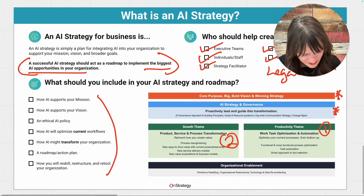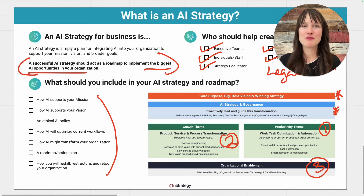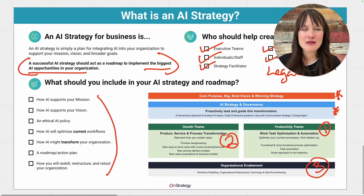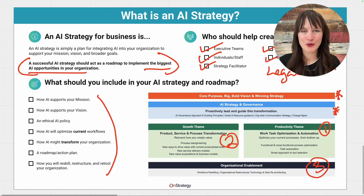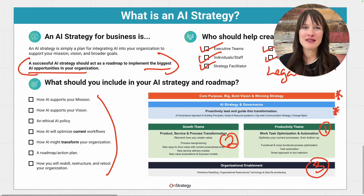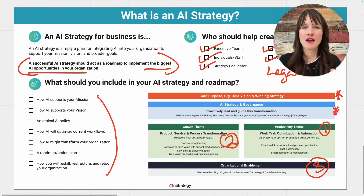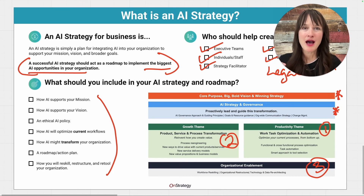Last, but certainly not least, is organizational enablement. The change aspect of this is so important. As organizations, we want to enable human efforts and automate what's automatable and AI what's AI-able. That means that our team needs to be enabled, re-skilled, and possibly restructured. So that's the third piece of your strategy. That's the framework — we developed this, it's really working, it's helping create organization out of the chaos.